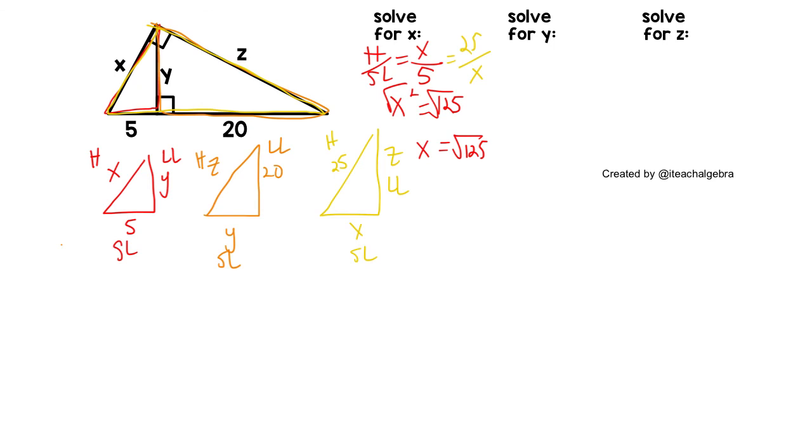Now we need Y. Got Y, the long leg on the red triangle and the short leg on the orange. So we're going to make it long leg over short leg. That's Y over 5 equals long leg, 20 over Y. That's Y squared equals 100. That means Y is 10.